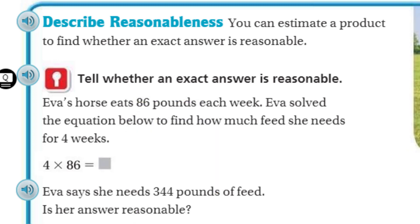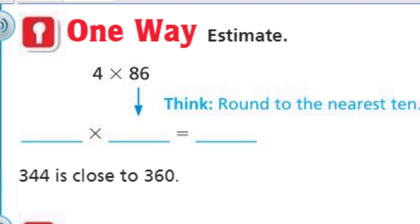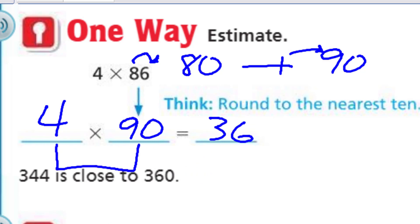Now it says, describe reasonableness. You can estimate a product to find whether an exact answer is reasonable. This is really important to understand. Eva's horse eats 86 pounds each week. Eva solved the equation below to find how much feed she needs for four weeks. Eva says she needs 344 pounds of feed. Is her answer reasonable? So now we have an exact answer. This is her claim, so it's our job to find out, is it reasonable? This is where the estimation can come into play. One way, estimate. Round to the nearest ten. Four weeks, we're going to round this to the nearest ten. We look at that neighbor. 86 is closer to 90. Four times 90, which our answer would be, if you just think of our simple facts of four times nine, which is 36, and we have another power of 10, so we end up with 360. Now 344 is close to 360, so we could say that the answer is reasonable.